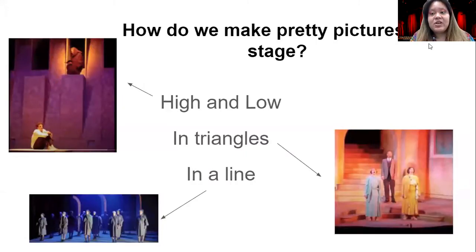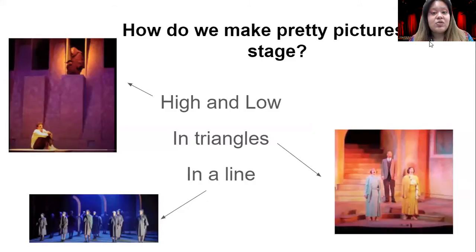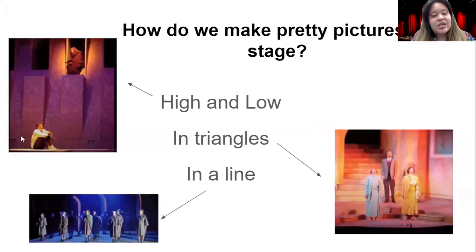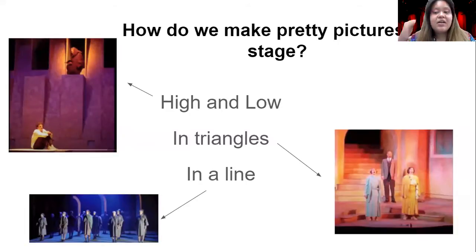The way that we make pictures on stage has to do with where we put the people on stage — the actors. There are three ways we're going to talk about to make those pictures prettier. Looking at the first picture, we put our actors high and low. You can see this person is in a high position on the taller part of the stage, and this actor is on the lower part. That gives our eyes two places to look: high and low.